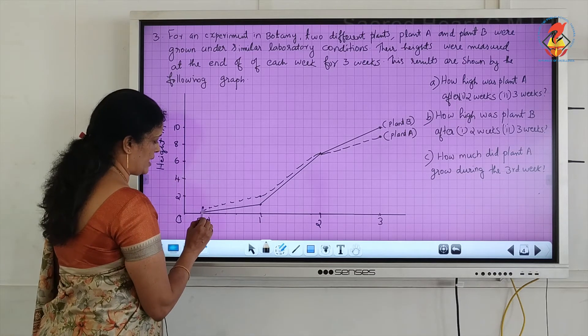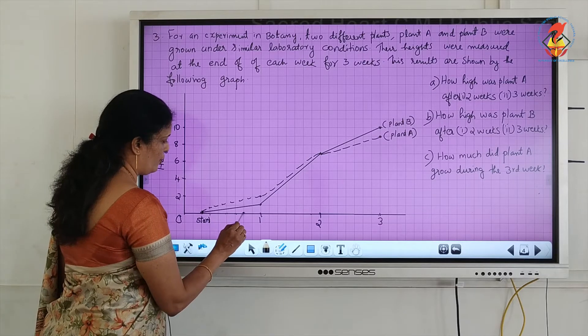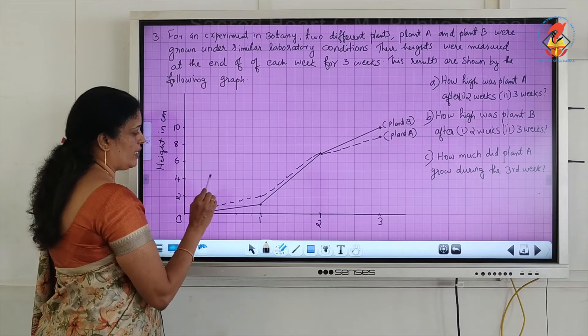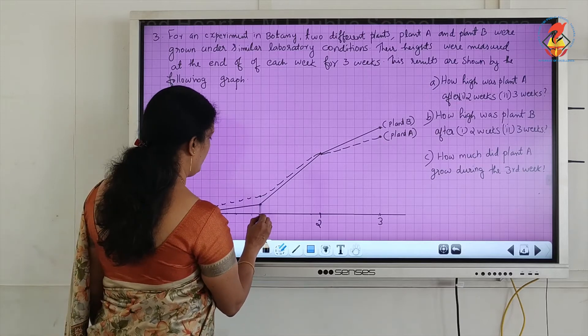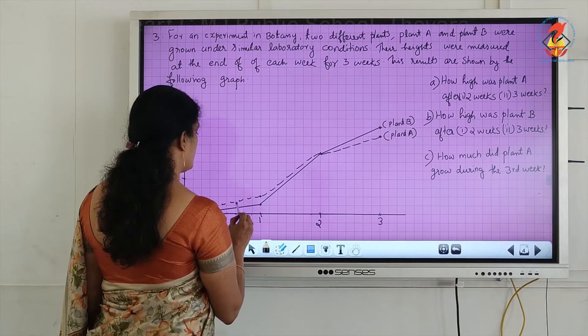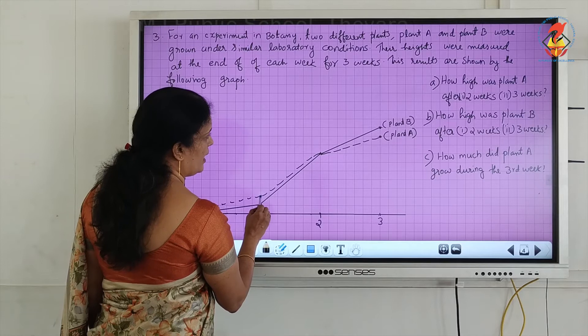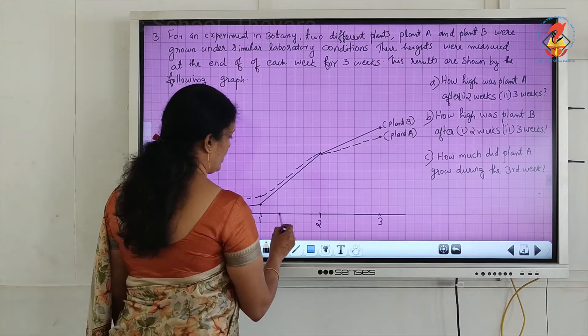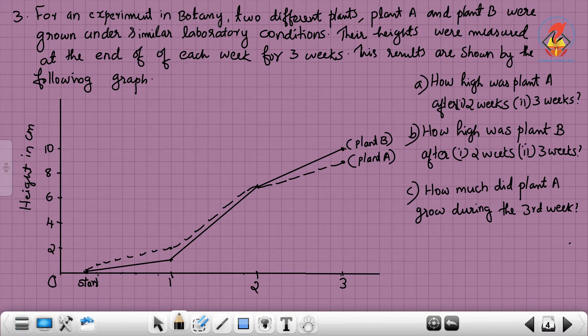After seven days, one week is over. After one week, plant B is 1 centimeter, plant A is 2 centimeters. After the second week, plant A and plant B both reach 7 centimeters. After the third week, plant A reaches 9 centimeters and plant B reaches 10 centimeters.